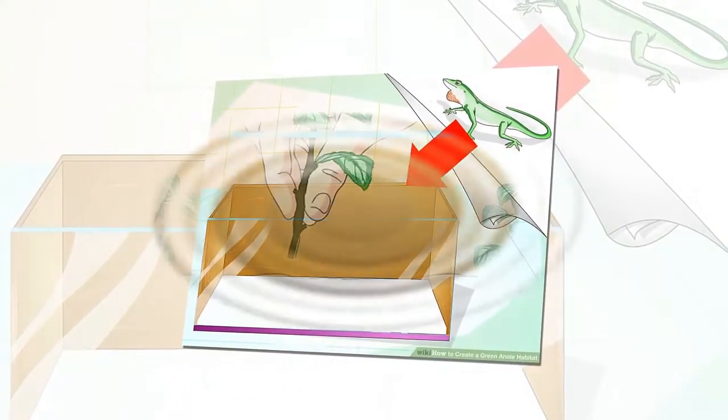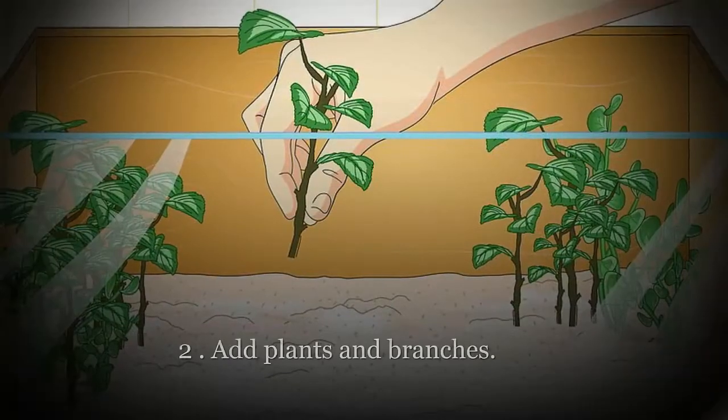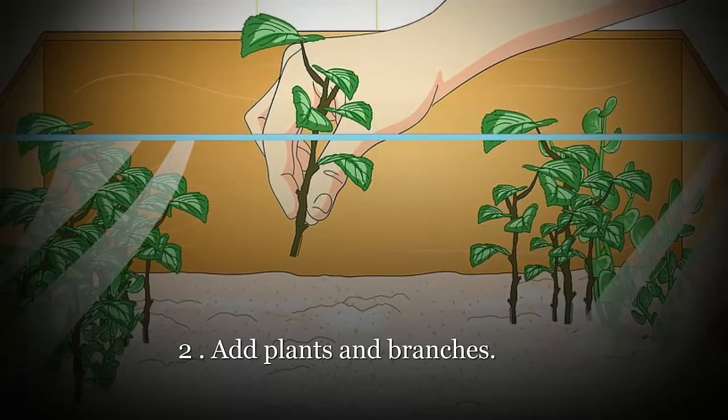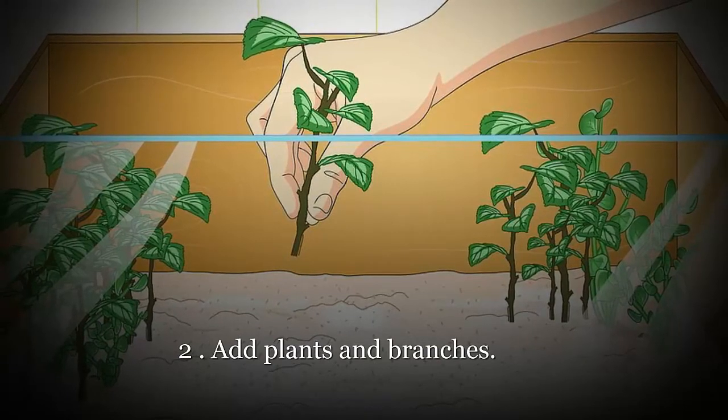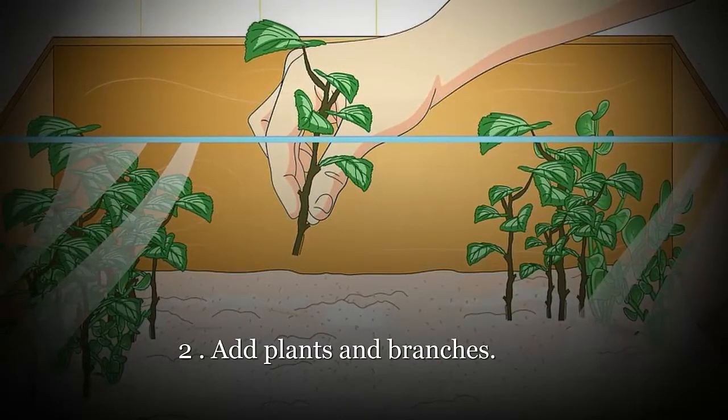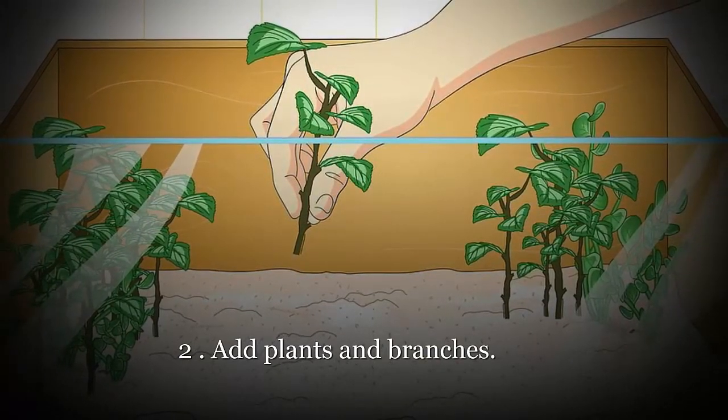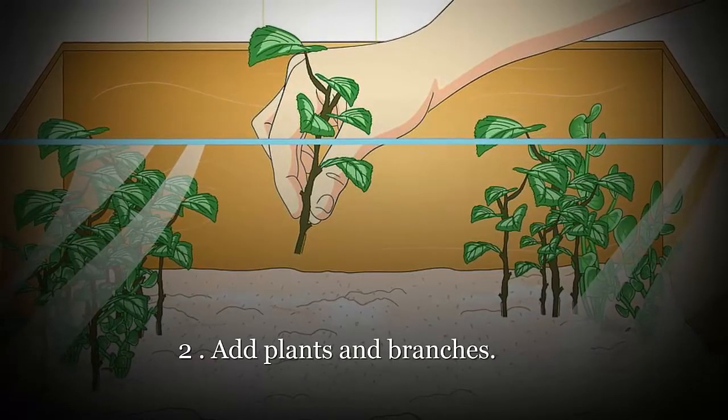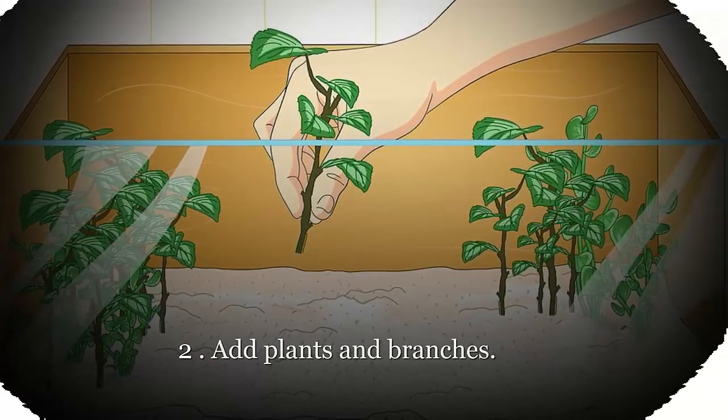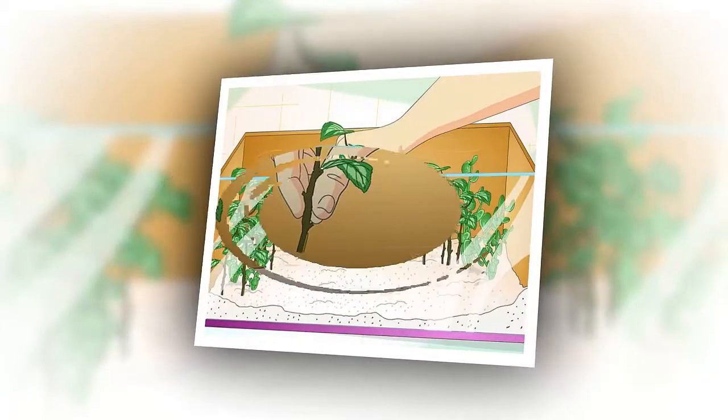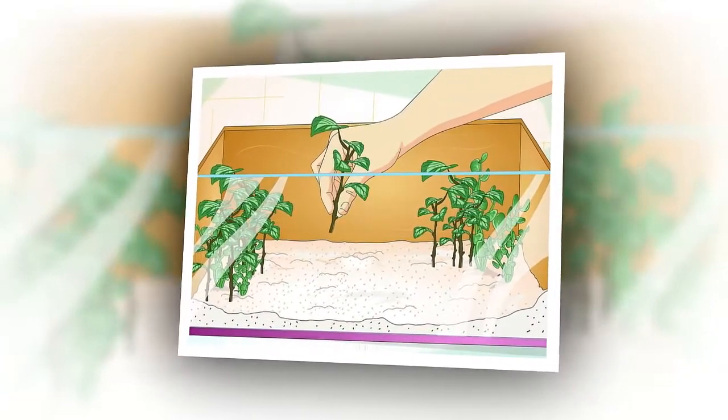Add plants and branches. Once you have your tank, you need to equip it with all the items your lizard needs for a stimulating and healthy habitat. Start by laying around 2 inches of sterile potting soil on the base of the tank and cover this with some bark mulch.